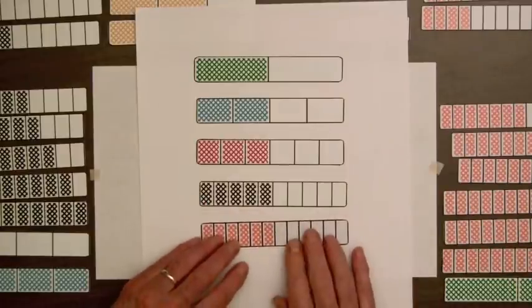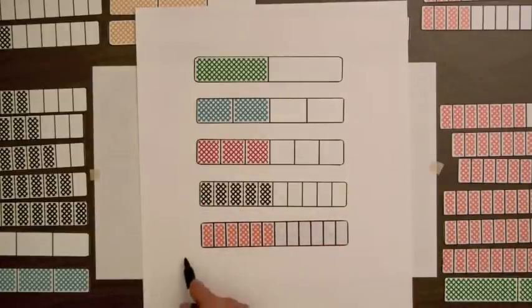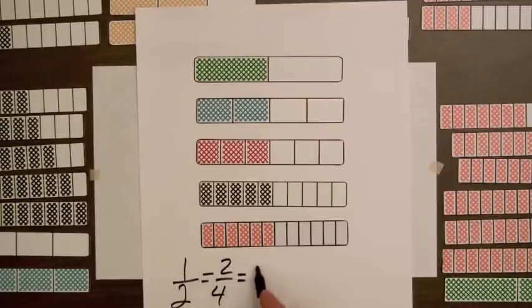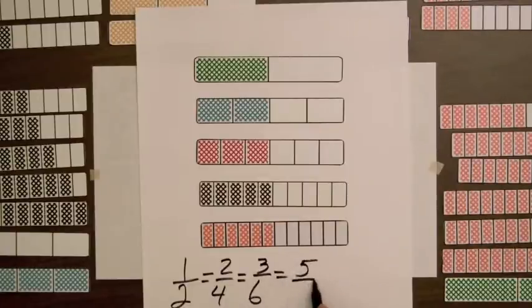So we have one half equal to two fourths, equal to three sixths, equal to five tenths, equal to six twelfths. One thing students will notice, if the numerator is half the denominator, the fraction equals one half.